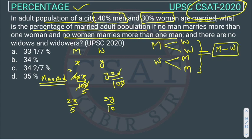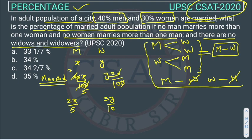One more condition is given: there are no widows and widowers. No man's wife has died, and no woman's husband has died. These four cases don't exist. So the condition is: the number of married men will be equal to the number of married women.